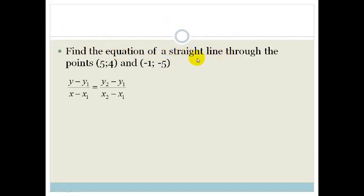It says, find the equation of a straight line through the points (5, 4) and (-1, -5). So again, the first thing you do is you assign one of the points to be point 1 and the other to be point 2. I'm going to let this one be point 1, so therefore this is going to be x1, y1, and this is going to be x2, y2. And then all you do is plug it into this formula.